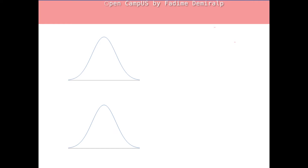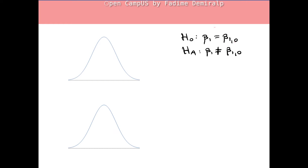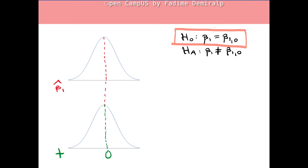In general, we write the null and alternative hypothesis for a two-sided test, where β₁,₀ is the hypothesized value. In large samples, under the null hypothesis, the t-statistic is a random variable with approximately a standard normal distribution. The t-statistic is the standardized version of β₁-hat. The center of the distribution is β₁, and under the null hypothesis β₁ is assumed to equal the hypothesized value.